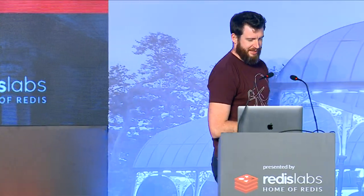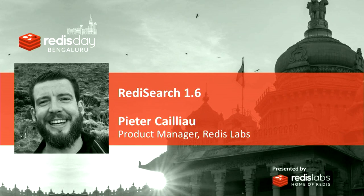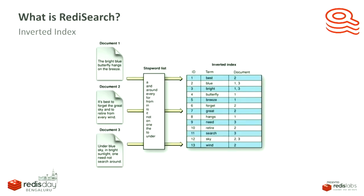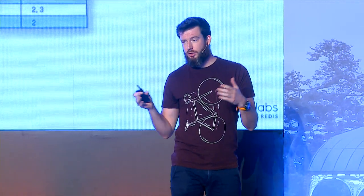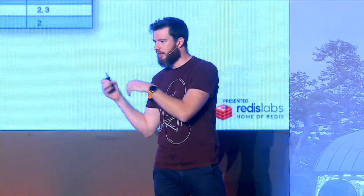Let's get started with the modules. First up is Redis Search 1.6, released today. Just a recap: it's a full-text search index, we can also do aggregations and spell checking. The model is an inverted index — we have a bunch of documents, remove some stop words, and for each word create a list of documents containing that word. If you search for two words, we do a union of the two sets.